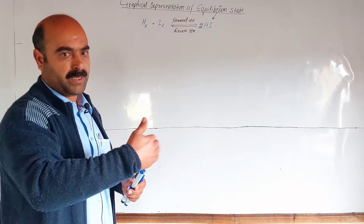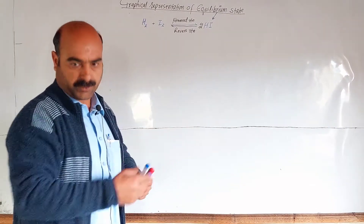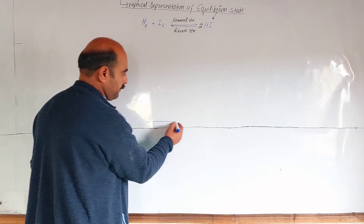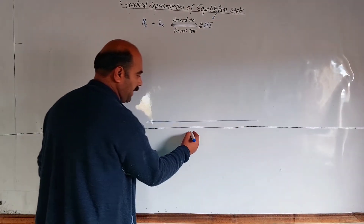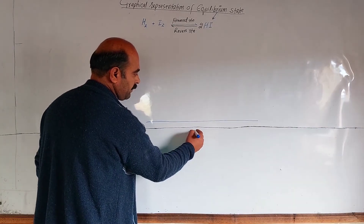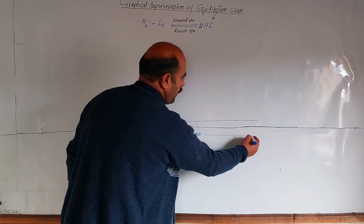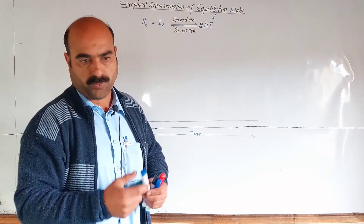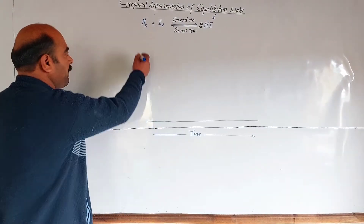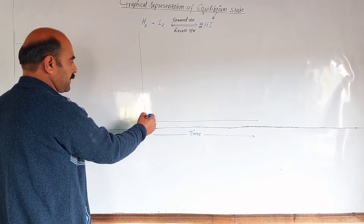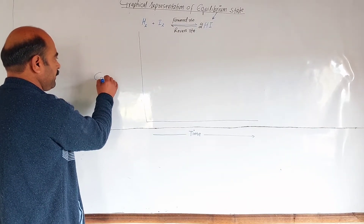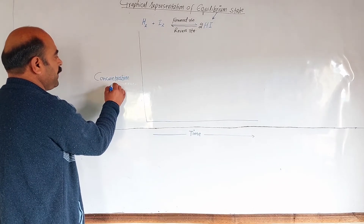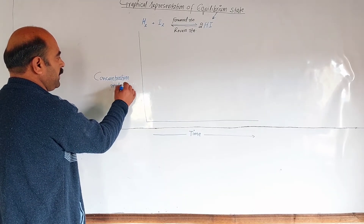On the graph, the X-axis represents time — measured in minutes, seconds, or hours. The Y-axis represents concentration.